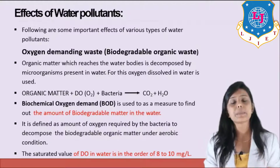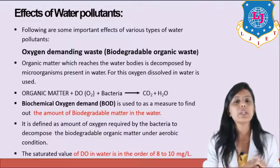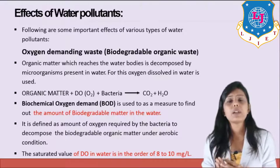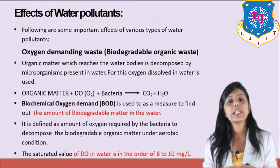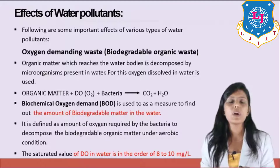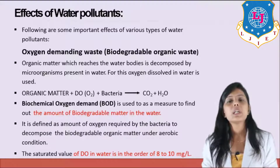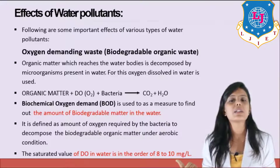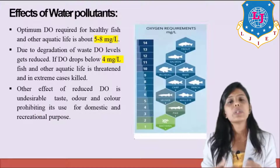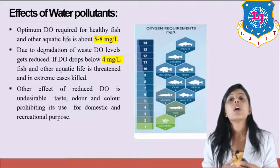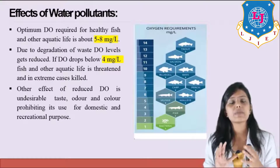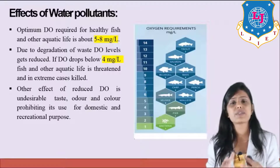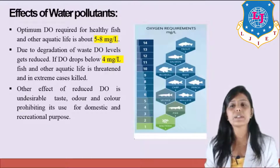Any water body should have 8 to 10 milligram per liter of dissolved oxygen. Whenever any oxygen demanding waste enters the water, it will demand oxygen for decomposition by bacteria. The standard concentration of oxygen in water is 8 to 10 milligram per liter. When bacteria utilize this oxygen, the level decreases to 5 to 8 milligram per liter, which is still acceptable. But due to more degradation of waste, dissolved oxygen level gets reduced further. If the dissolved oxygen drops below 4 milligram per liter, fish and other aquatic life is threatened and in extreme cases killed.